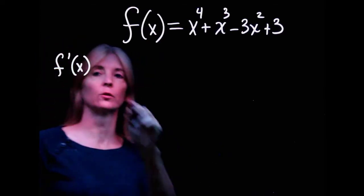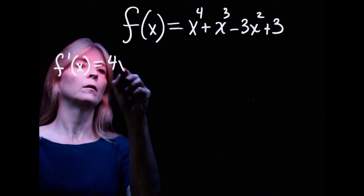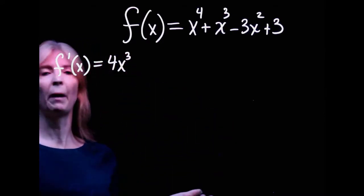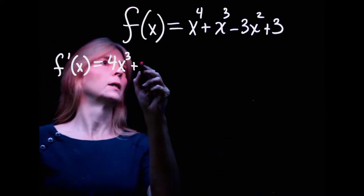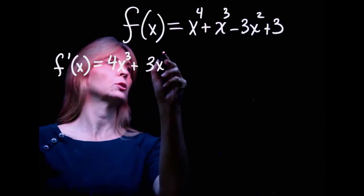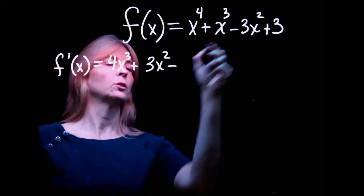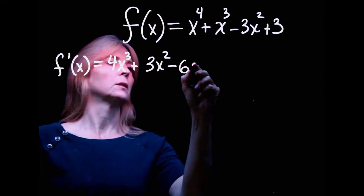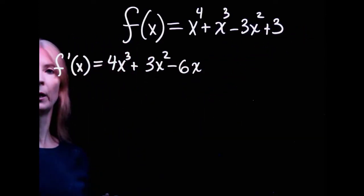You find the first derivative first. So bringing the 4 down, 4x cubed, this is just using the power rule, plus 3x squared minus 2 times 3, 6x to the first power, and then the 3 goes away.